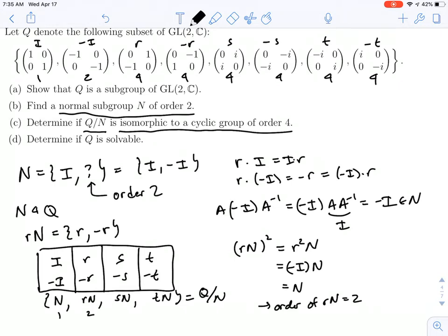But the exact same arguments will show that SN and TN also have order 2. So there is no element of order 4 in Q mod N. And so it must not be the cyclic group of order 4. In fact, it must be the other group of order 4, namely the Klein 4 group.